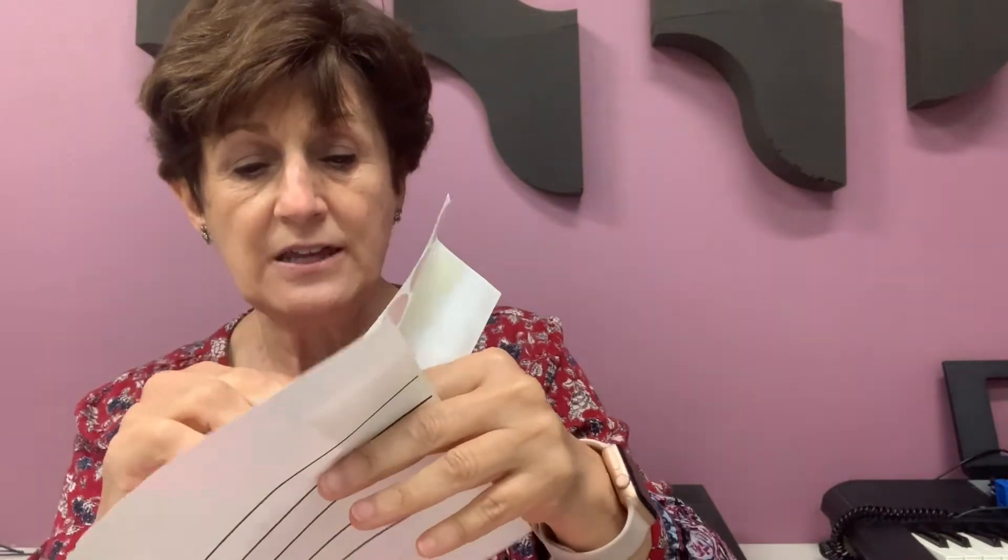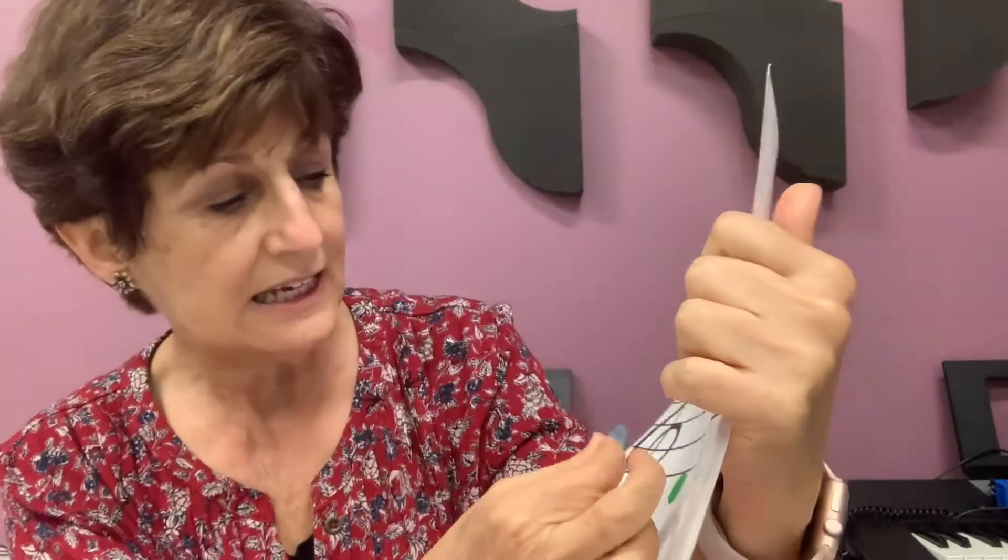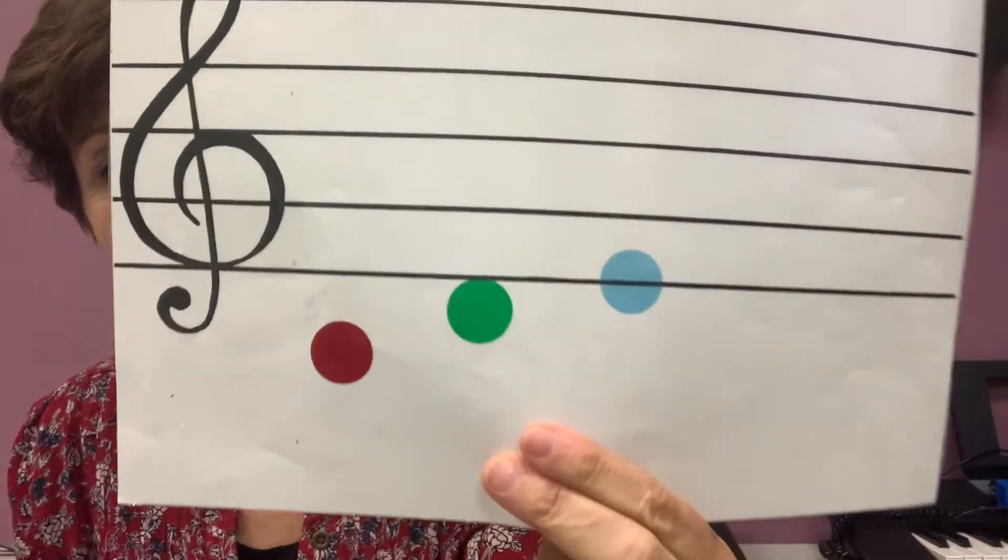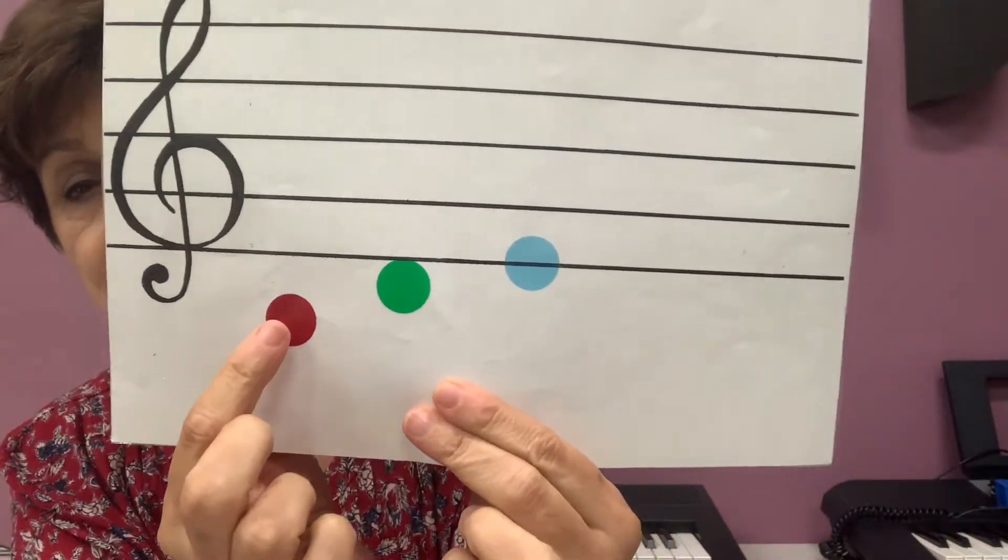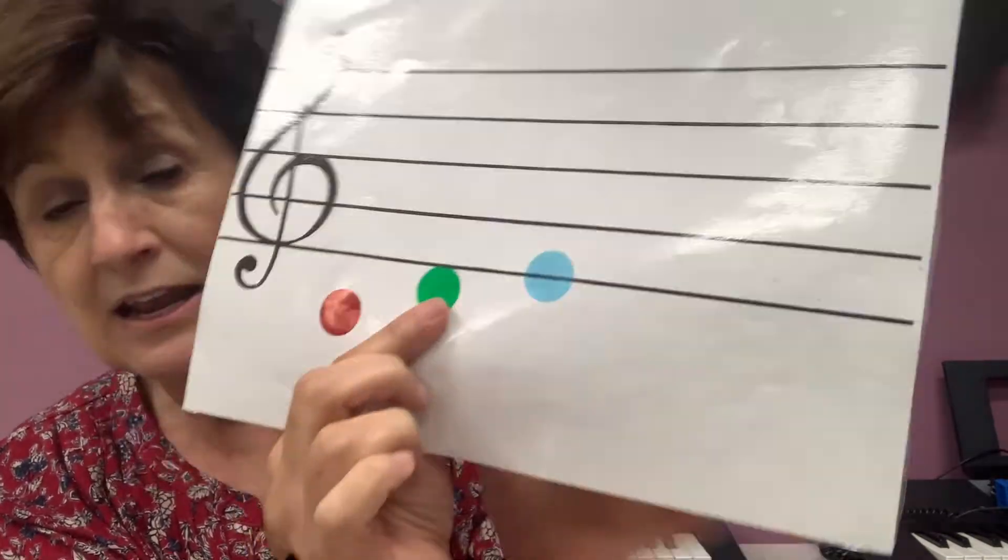And if I take another sticker, I've got two, and I stick it stepping on the first line, that's going to be an E. So I can make a C, a sticky D, or an E stepping on the line.